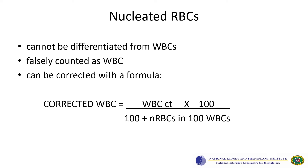The presence of a significant number of nucleated RBCs should be corrected because they cannot be differentiated from WBCs and could falsely be counted as WBCs. This can be corrected with a formula: corrected WBCs equals the WBC count multiplied by 100, divided by 100 plus the number of NRBCs per 100 WBCs obtained in the differential count.